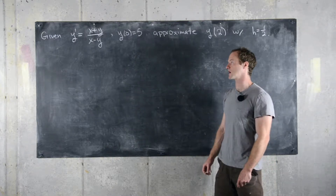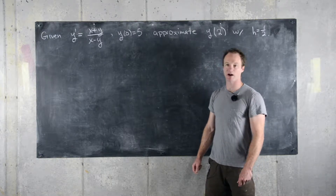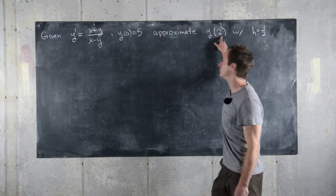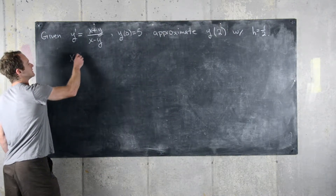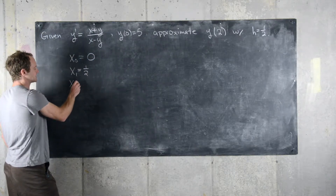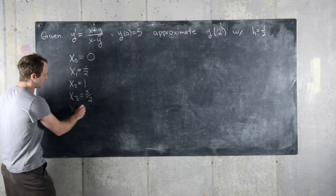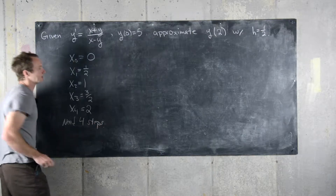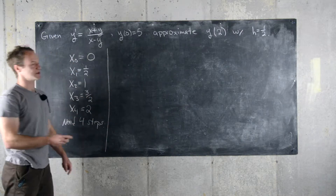Here's an example using Euler's method for approximating a solution to a differential equation numerically. We have the differential equation y' = (x + y) / (x - y), with initial condition y(0) = 5, and we want to approximate y(2) with a step size of 1/2. Let's lay out the x terms first: x_0 = 0, x_1 = 1/2, x_2 = 1, x_3 = 3/2, and x_4 = 2. So we need to do 4 steps.